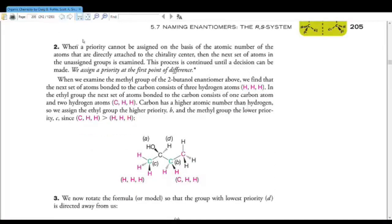When a priority cannot be assigned on the basis of the atomic number of the atoms that are directly attached to the chirality center, then the next set of atoms in the unassigned group is examined. This process is continued until a decision can be made. We assign a priority at the first point of difference. For this one here, we can see that the methyl group is bonded to 3 hydrogens. So our only choice from here is hydrogen. This one is 2 hydrogens but a carbon. So the highest choice over here is hydrogen. The highest choice over here is carbon. So this group has the higher priority.